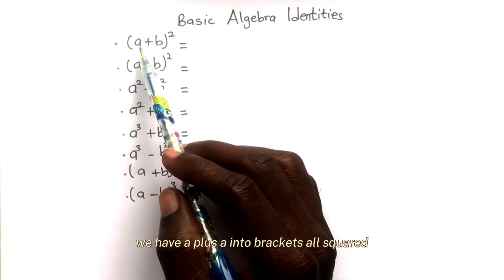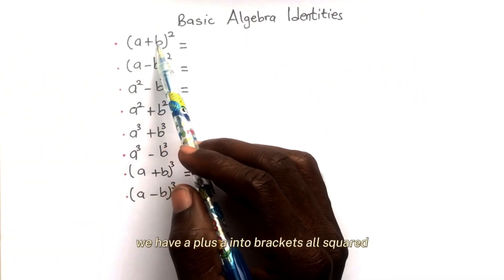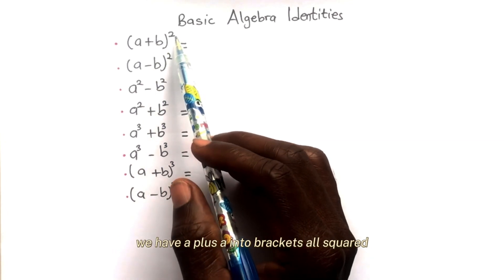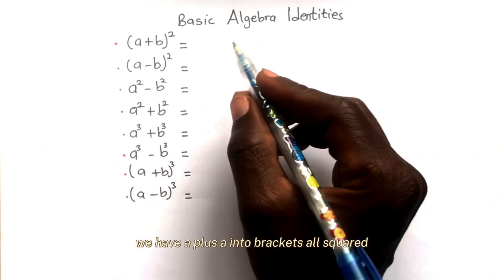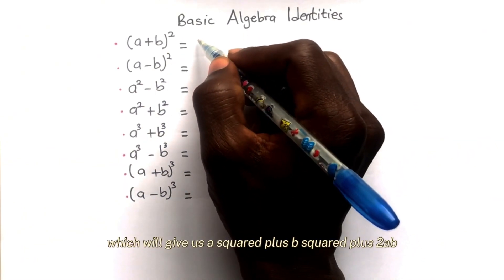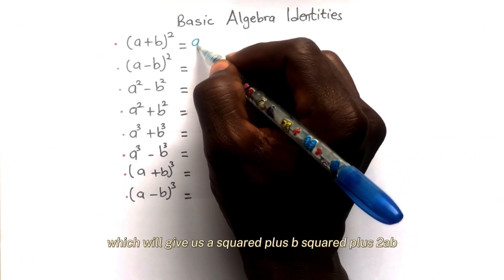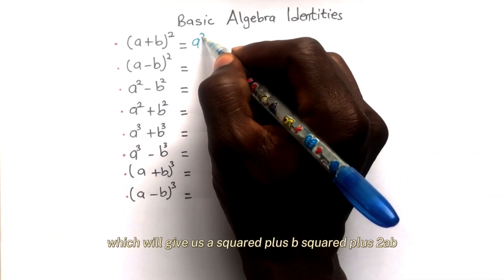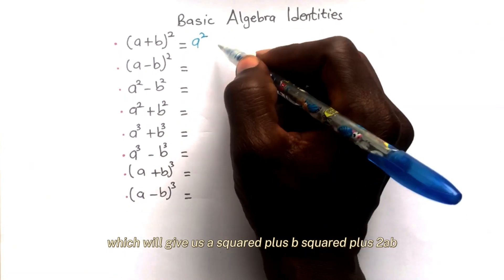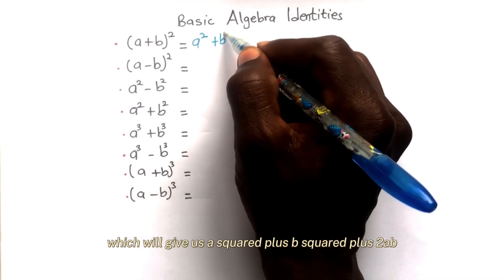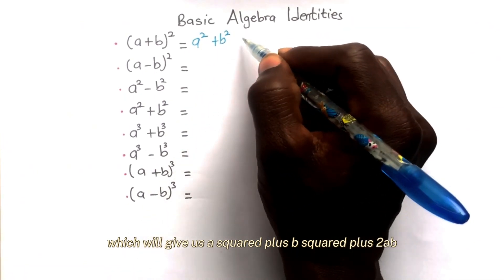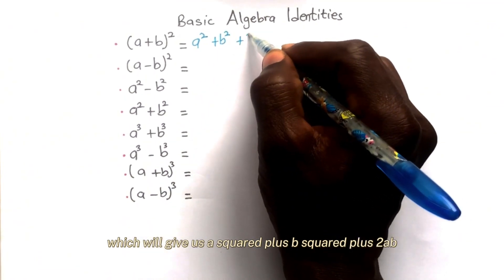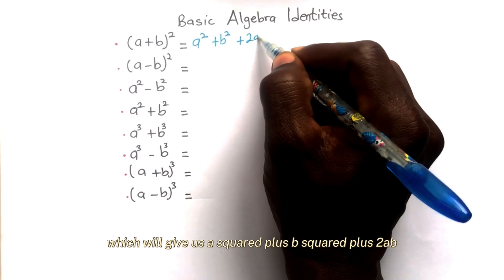(a + b) all squared will give us a squared plus b squared plus 2ab.